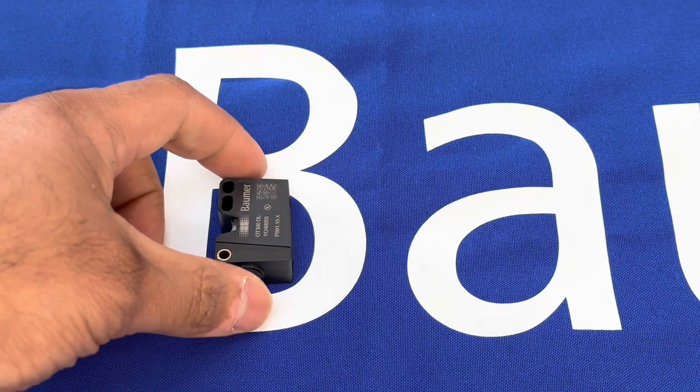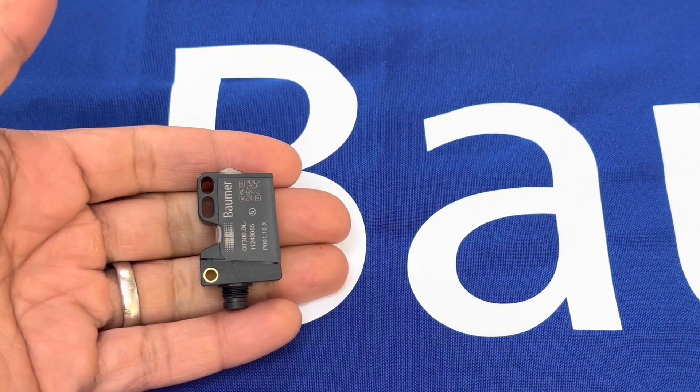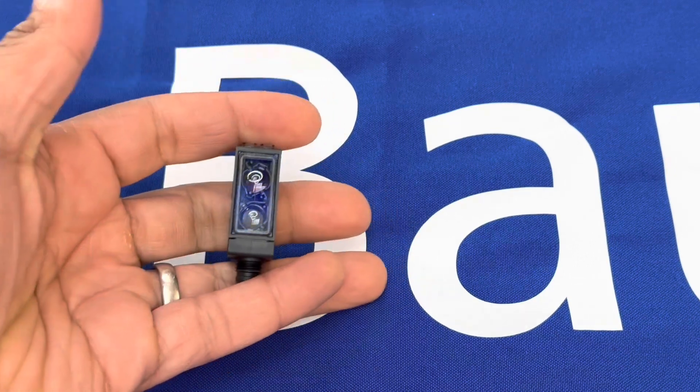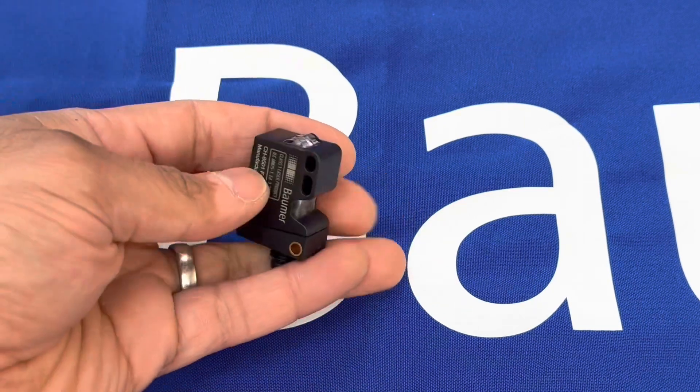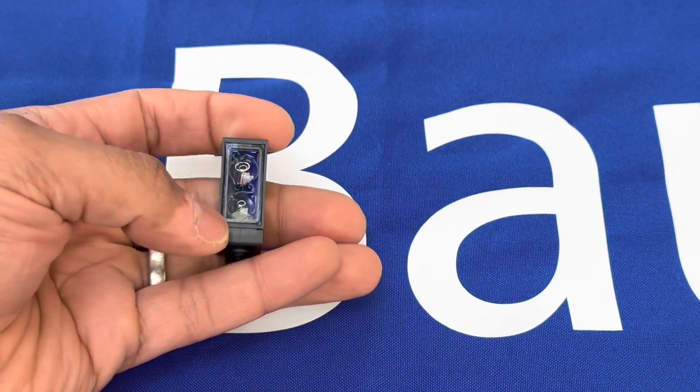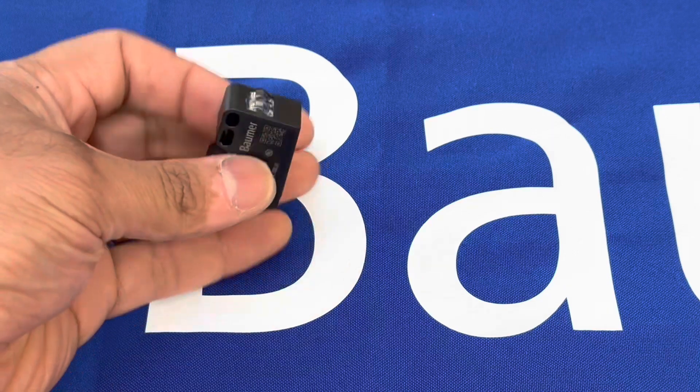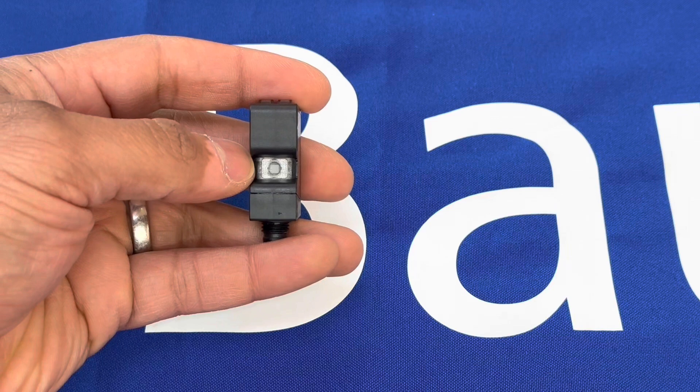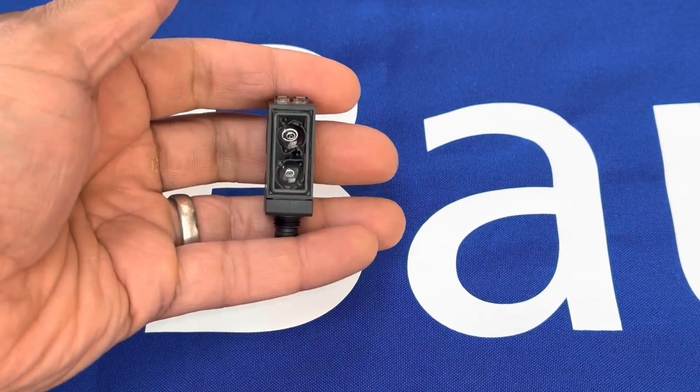Hi, just a quick video to introduce you to Baumer's time-of-flight distance laser sensor, the OT300DL. You can see it's in a compact photocell body, same as the rest of the O300 series. You can see the emission point here, the receiving lens here, LEDs on the top for output indication, and the area on the back for QT, just like the rest of the series.